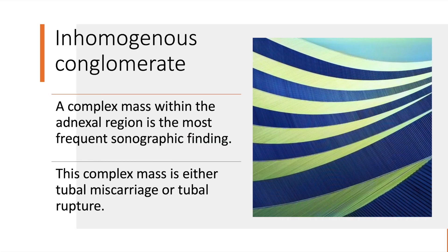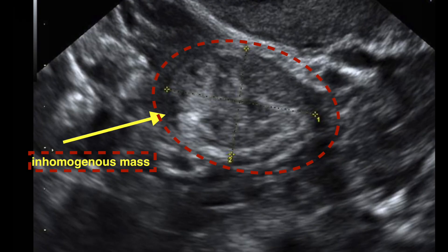The next ultrasound diagnosis is the presence of an inhomogeneous conglomerate, which is nothing but the presence of a complex mass in the adnexal area. As shown in this picture, neither an embryo nor a gestational sac is clearly identified.